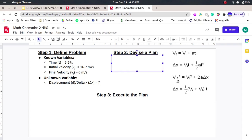Let's look at the third one. Vf, we know. Vi, we know. But A, we don't know A. So we can't use the third equation either.